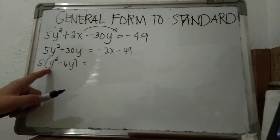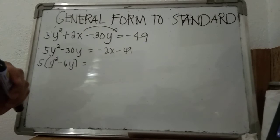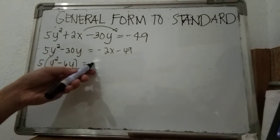5 times y² is 5y², 5 times negative 6y is negative 30y. Then we copy the right side. Now from here we are going to transform the function inside the parenthesis into a perfect square trinomial.